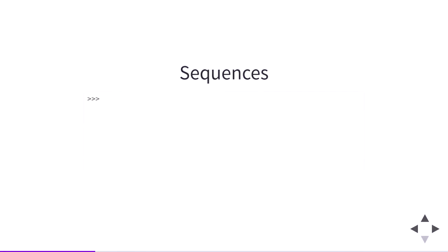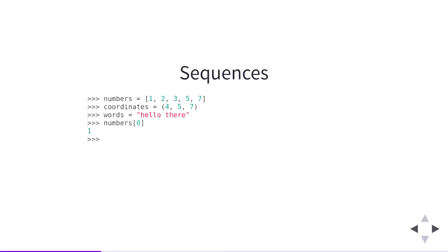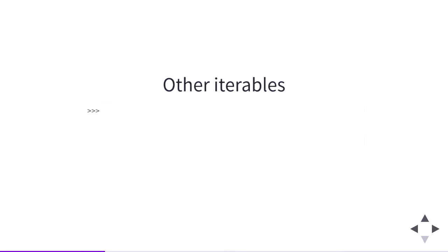Sequences are a very common type of iterable in Python. Lists are sequences, tuples are sequences, and strings are sequences. Sequences are iterables which can be indexed starting from zero and ending at one less than the length of the sequence. They have other features like lengths and slicing, but many things in Python are iterables but not sequences.